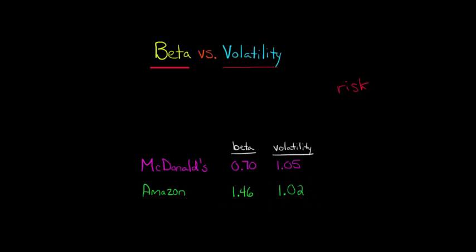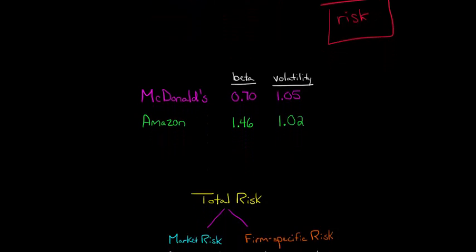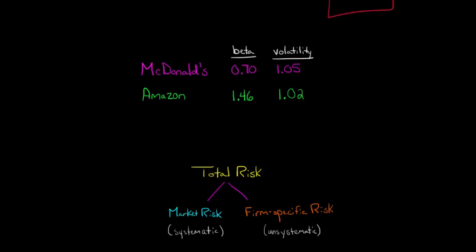That might be confusing if you're seeing beta and volatility both as measures of risk and not really understanding the difference between the two. Remember that volatility is the standard deviation of a stock's return. So ultimately that's a measure of total risk of the firm. When we think about the volatility of McDonald's being 1.05, that's really the total risk of McDonald's.